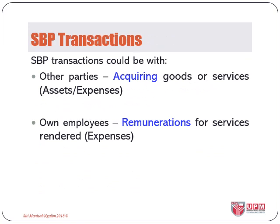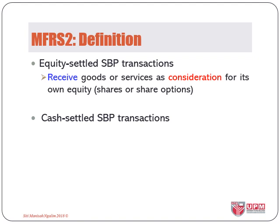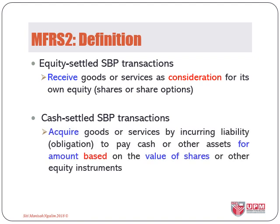For SBP transactions, we have two major groups. Briefly, equity-settled SBP transactions result in an entity receiving goods or services in exchange for its shares, and cash-settled SBP transactions result in an entity receiving goods or services by incurring an obligation to pay in cash, thus a liability based on the value of its shares.